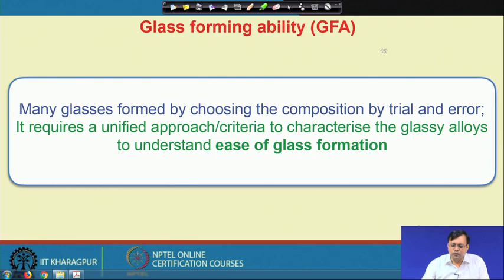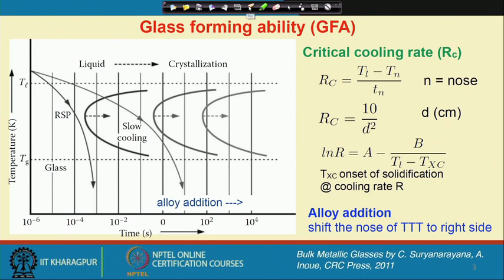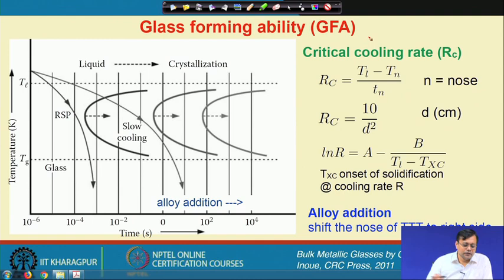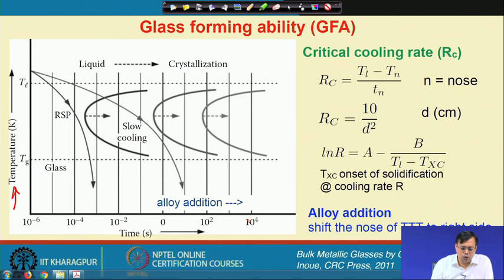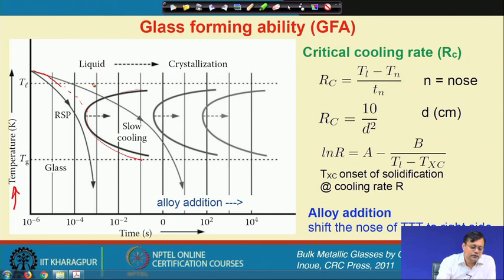In earlier classes, we talked about the time-temperature transformation diagram, which is also an important diagram for glass-forming alloys. On the left-hand side, I have plotted schematically temperature versus process time, with time shown on a log scale. Let us say I have chosen an alloy, and this alloy has a TTT diagram like this C-type curve. When we cool it, if the undercooling is very high, then the nucleation rate is very high, so the nose at the top part of the TTT curve will have such a shape.